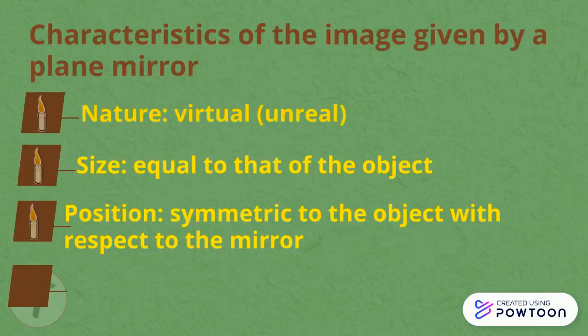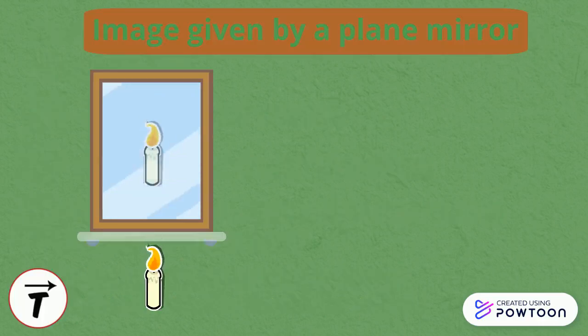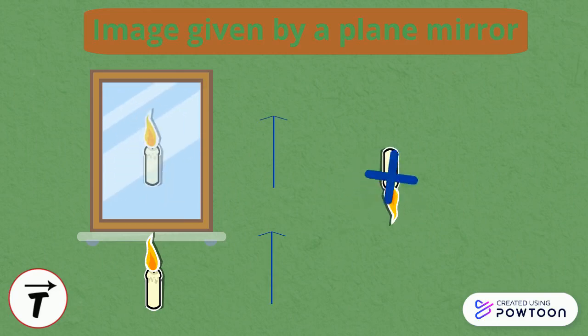Fourth, orientation. The image is erect — that is, not inverted — and has the same orientation as that of the object. The candle has a flame on its top, and the image of the candle will appear with its flame on top as well.